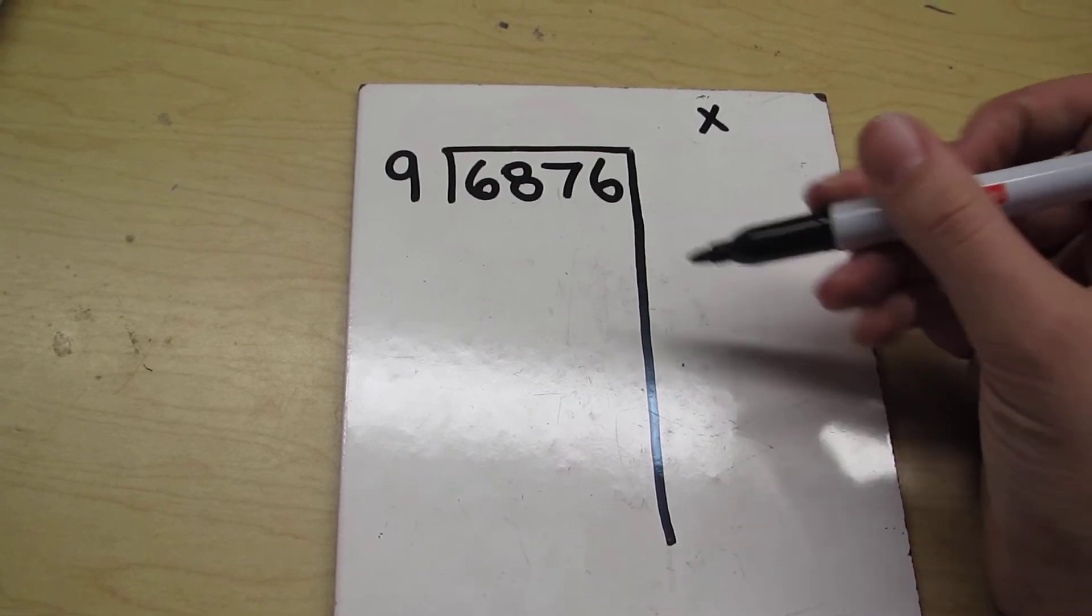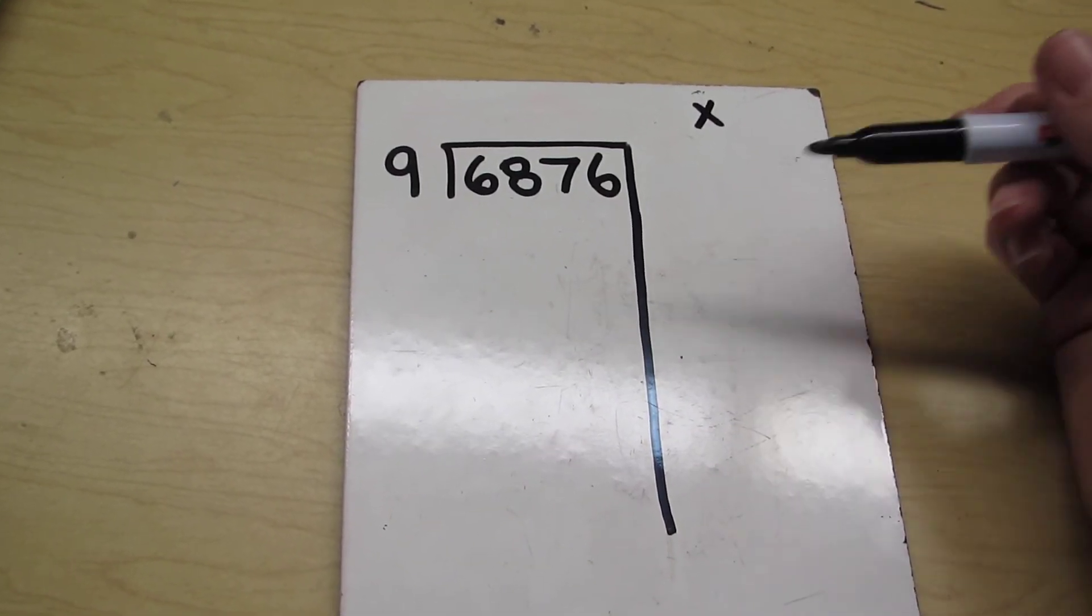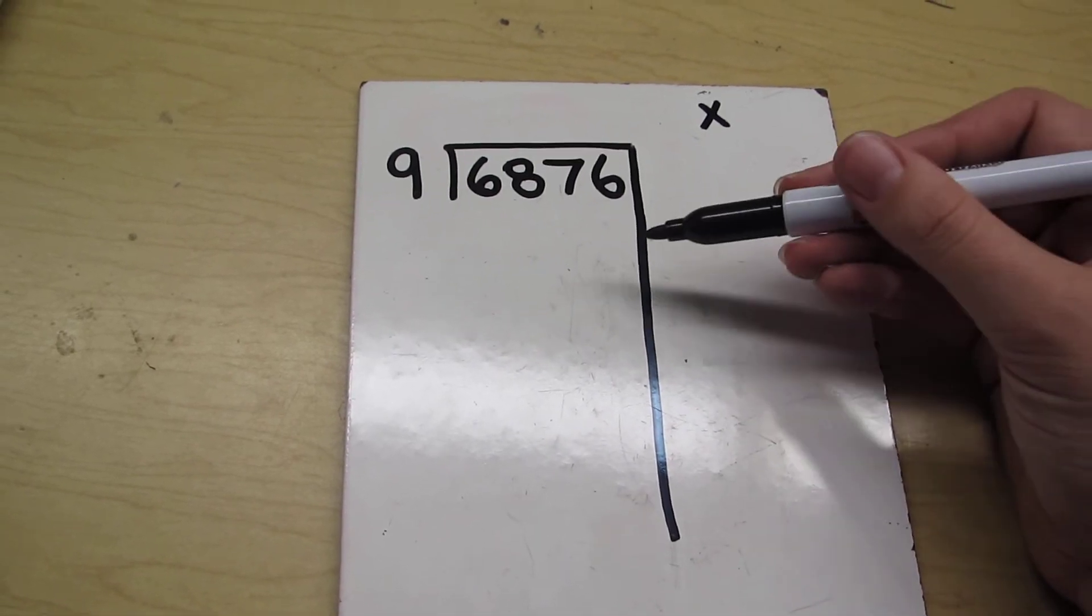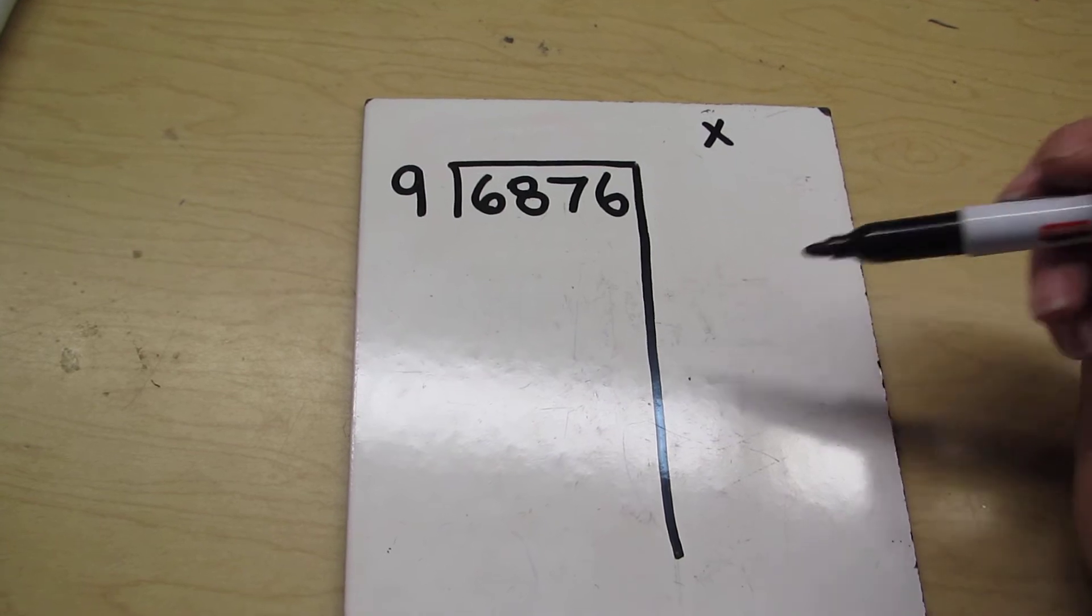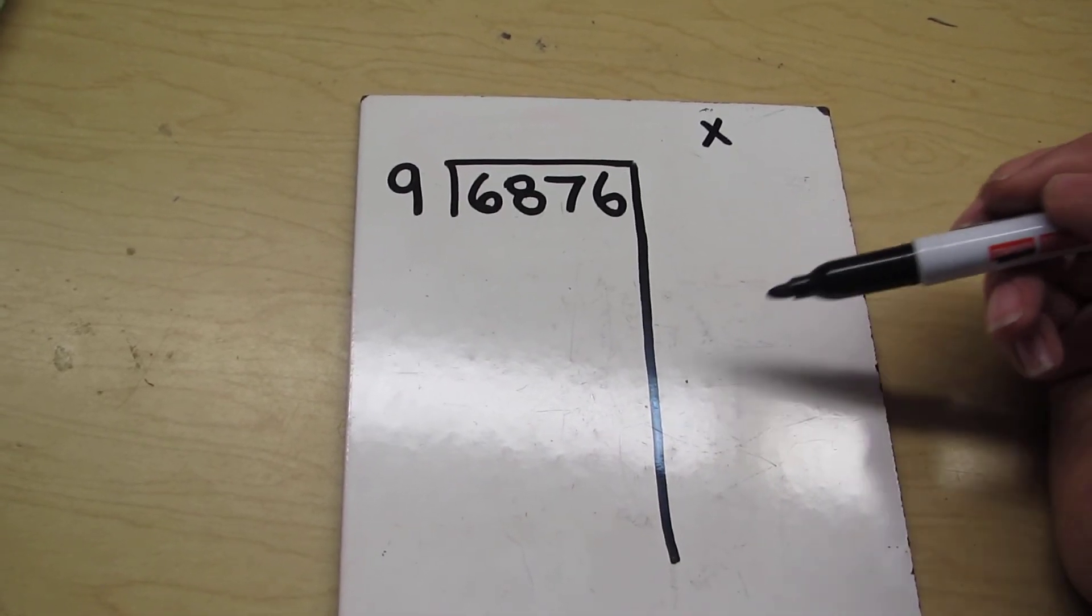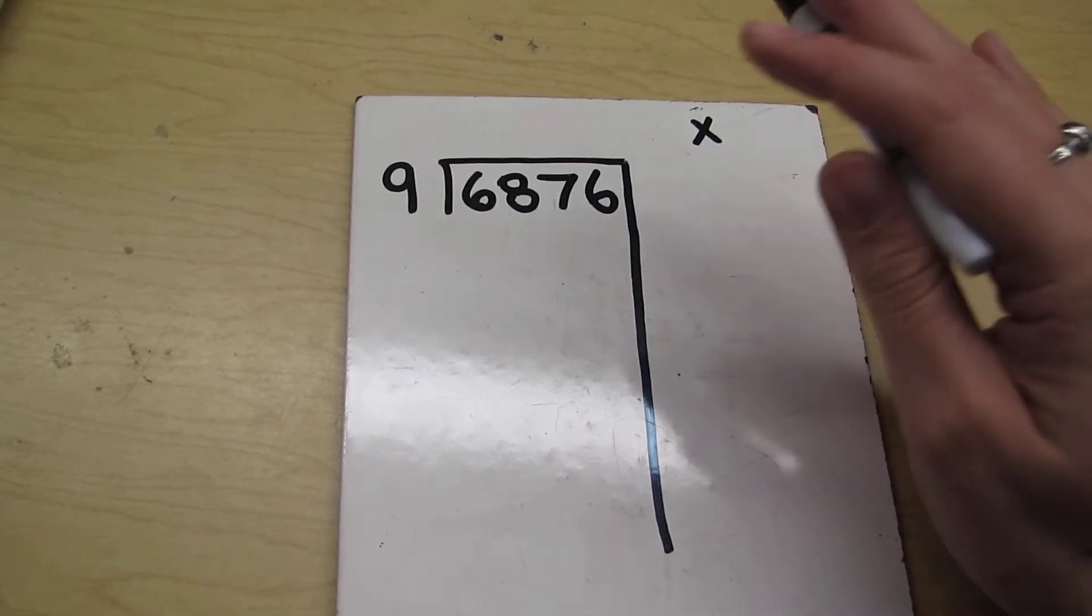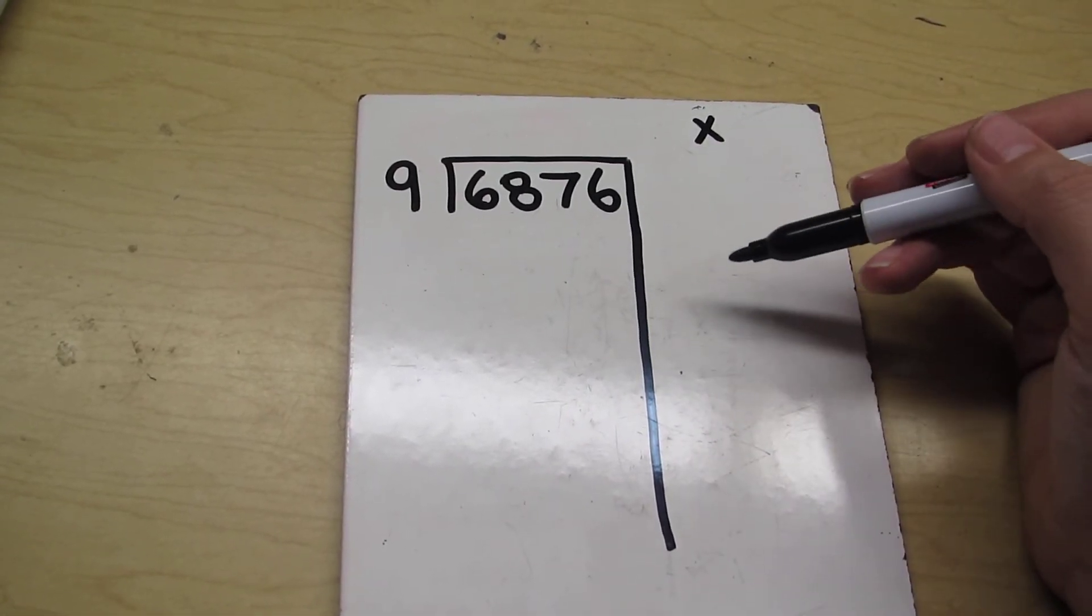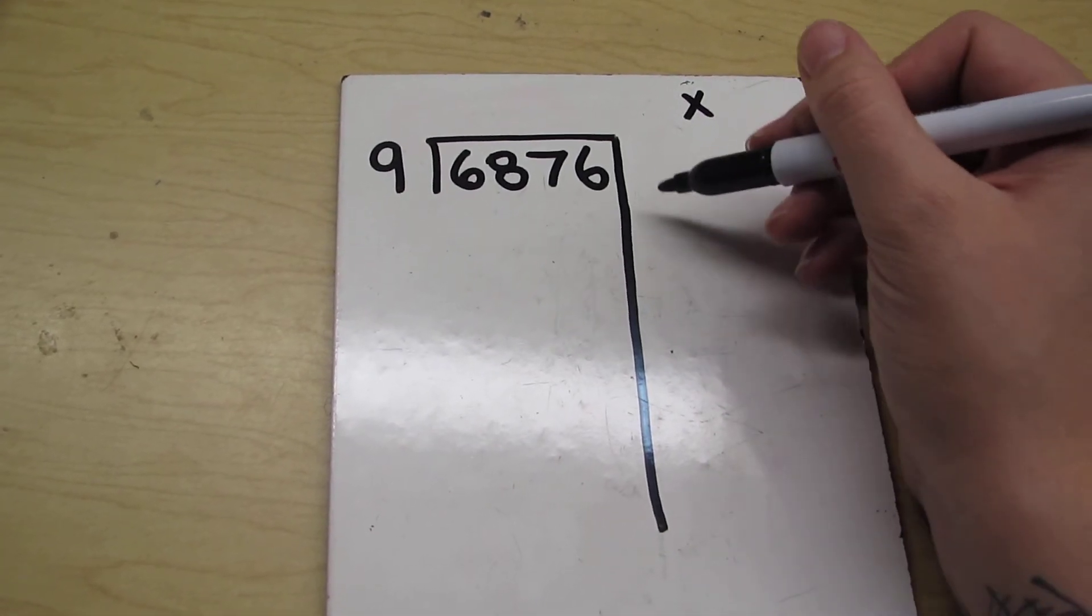So first of all, we want to pick numbers that are easy to work with. We don't want to do more math for nothing. We don't want to pick numbers like 9 times 63 or 9 times 72. We want to pick numbers that we can easily work with in our head. So that's why we've been practicing the adding zero trick and all that. Let's try something like, for example, 9 times 7.